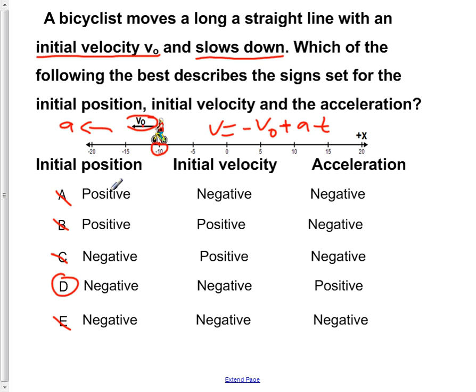So, our answer is D. Initial position is negative. Our initial velocity is negative. And the acceleration is positive. And everybody is positive. Thank you.